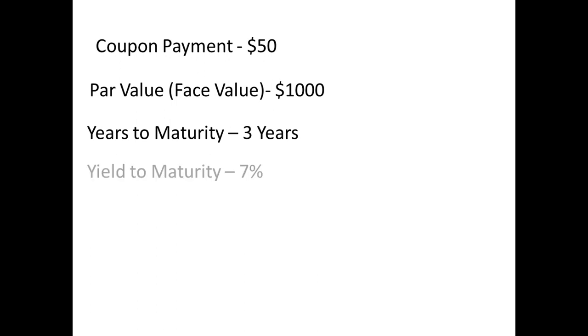Let's assume we have a bond with an annual coupon payment of $50 and a par value of $1,000. Let's also assume that there are three more years until maturity and the yield to maturity is 7%. How would we calculate the present value?